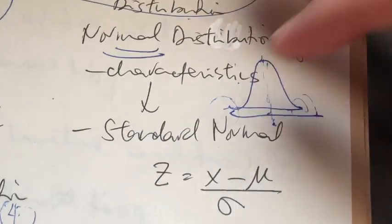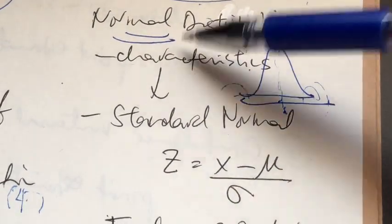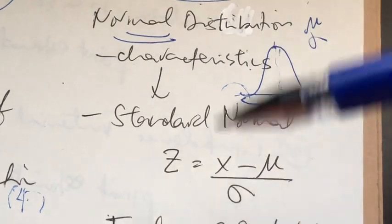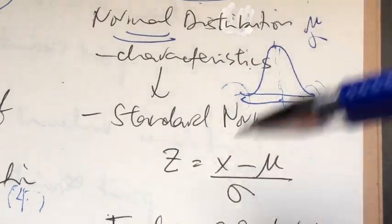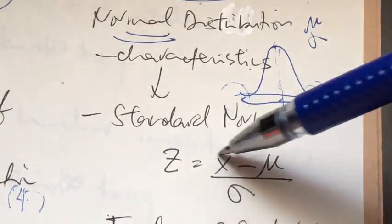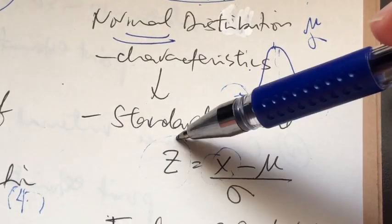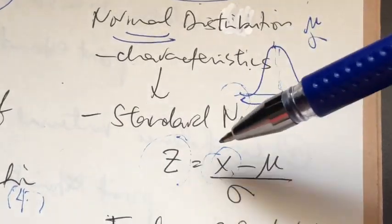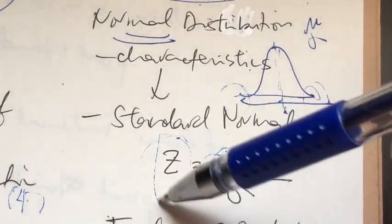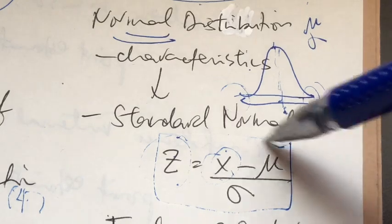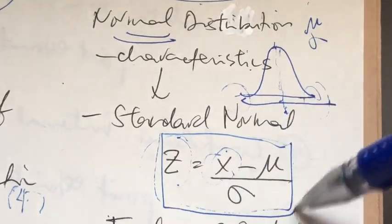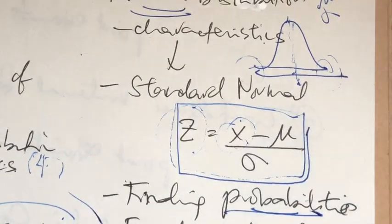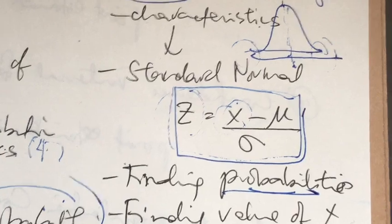Since there is a family of normal distributions, we need to know how to solve probability questions. That is why we learned the standard normal. In order to solve a normal distribution probability question, we convert all x values to z. Once we convert all x to z, we can use the normal table to solve the probability questions.